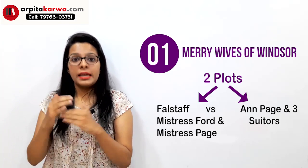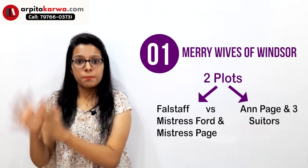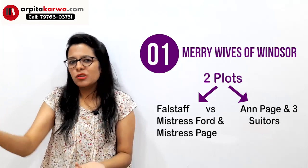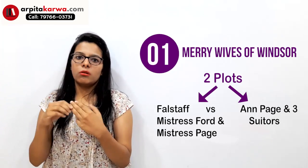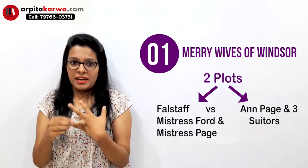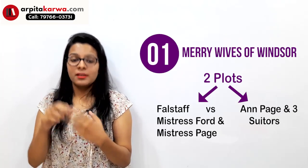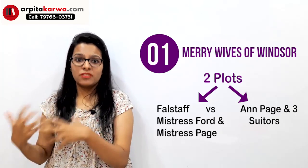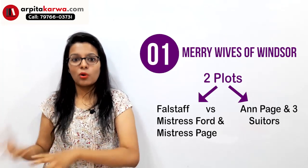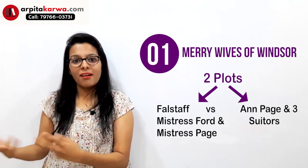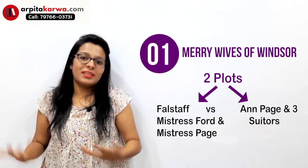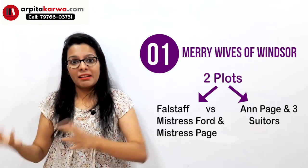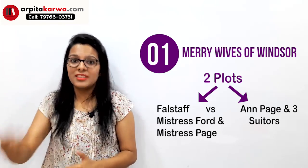Another storyline in this play is the relationship of Anne Page and three suitors — people who would like to marry her. The three suitors are Fenton, Doctor Caius, and Slender. One suitor is favored by Anne Page's mother, another is favored by her father, and the third — Fenton — is in love with Anne Page, and she loves him back. At the end we find that Fenton marries Anne Page, and the play ends happily.